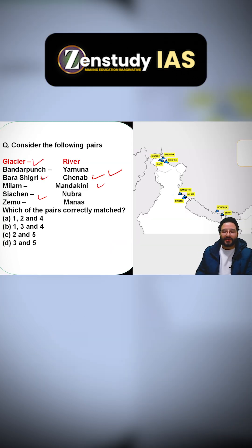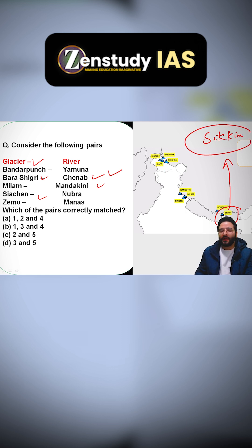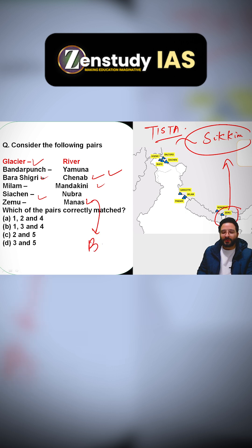When I look at Zemu glacier — you can look at the screen over here — it is located in Sikkim. The Zemu glacier is found in Sikkim, and please remember this: the river Tista is going to originate from it, not the Manas. Manas is going to be a tributary of the river Brahmaputra.